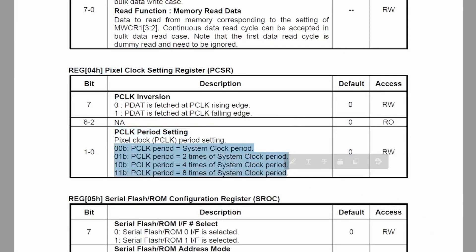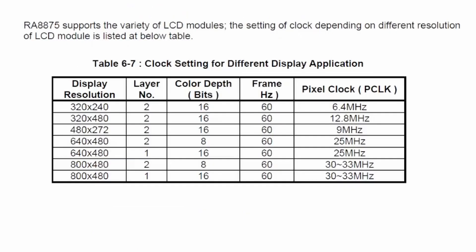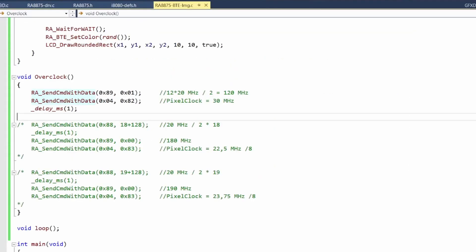This is important because every LCD panel, depending on the resolution, has an acceptable pixel clock frequency range. Too high a frequency and the LCD panel will not be able to produce an image; too slow, and in the long term we can expect some panel degradation. For an 800x480 LCD panel, the acceptable pixel clock frequency is between 30 to 35 MHz. It means that if we want to increase the system clock frequency, we must adjust the divider so the pixel clock remains within the acceptable range.